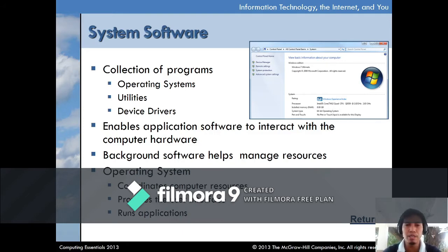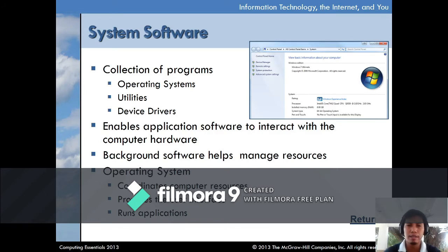System software is a collection of software programs which includes the operating system, utilities, and device drivers. System software enables application software to interact with the computer hardware — it serves as an interface between the user and the computer. These are background software that help manage resources. The operating system is the most common system software; it coordinates computer resources, provides a user interface, and runs applications. Common examples include Windows and Mac OS.